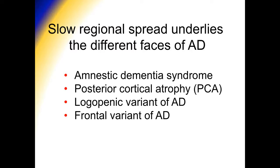This regional spread, whether due to prion-like cell-to-cell properties or something else, may underlie the different faces of Alzheimer's disease. The most common form is the amnestic form — typical late-onset after age 65, with slowly progressive memory problems, later developing word-finding problems, executive dysfunction, and profound dementia. But there are other variants that typically occur at slightly younger ages: posterior cortical atrophy, logopenic variant, and frontal variant of Alzheimer's disease. These involve more of the visual processing areas, the language areas, and the behavioral control areas of the brain, respectively.